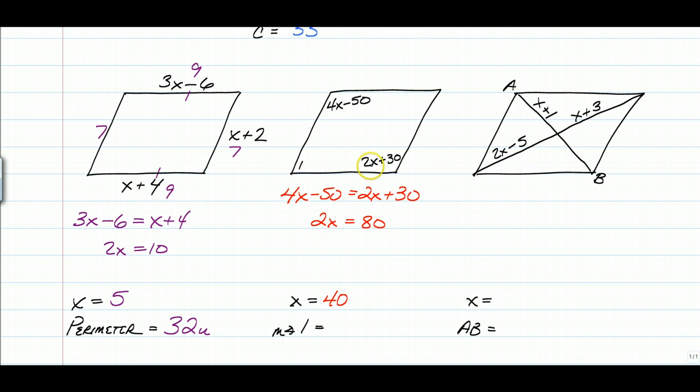So once we substitute 40 in here, that's going to give us 2 times 40 is 80 plus 30 is 110 degrees. So angle 1 is the same side interior with it. It's not the opposite. So angle 1 is supplementary to 110. So angle 1 is 70 degrees. So again, that example messed around with the angle properties of a parallelogram.